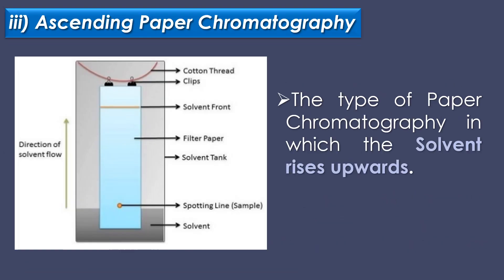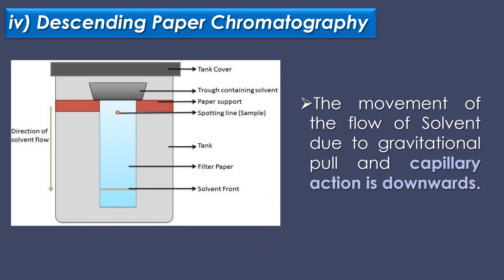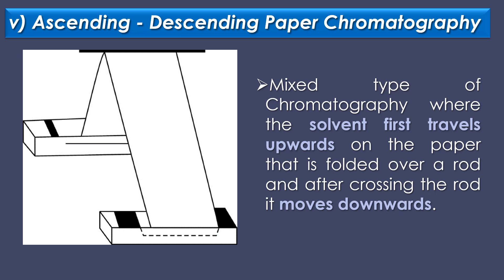The third type is ascending paper chromatography, in which the solvent rises upwards. The fourth type is descending paper chromatography, where the movement of the solvent due to gravitational pull and capillary action is downwards. The fifth type is ascending-descending paper chromatography, a mixed type where the solvent first travels upward on the paper that is folded over a rod and after crossing the rod it moves downwards.